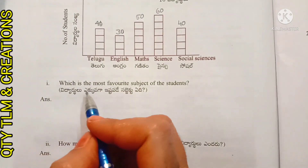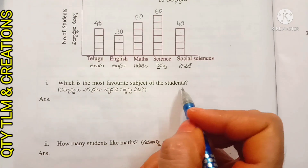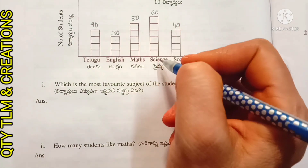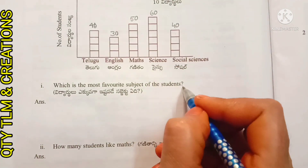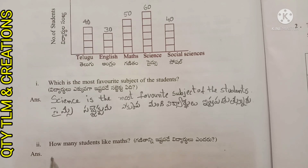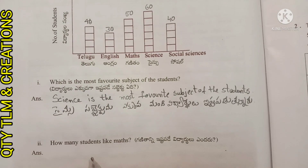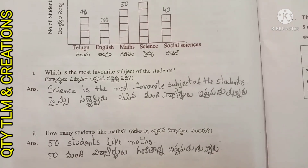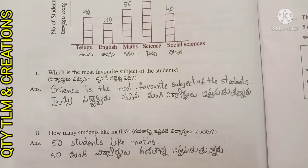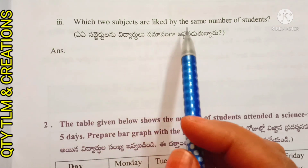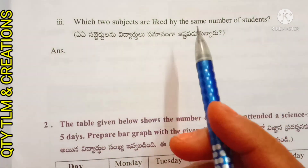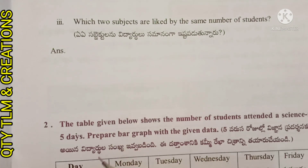First question: which is the most favorite subject of students? Sixty students like Science, so Science is the most favorite. Next question: how many students like Maths? Fifty students like Math. Next question: which two subjects are liked by the same number of students? Telugu and Social subjects are liked by the same number of students, that is forty each.